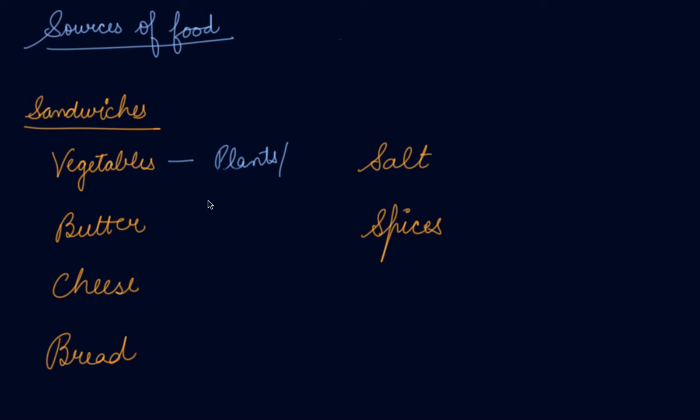From plants and trees. If I say butter, where do you get the butter from? You get milk from buffalo or cow, then you convert the milk into butter. So the main source of butter is animal.